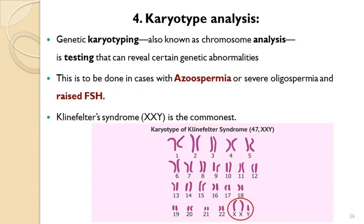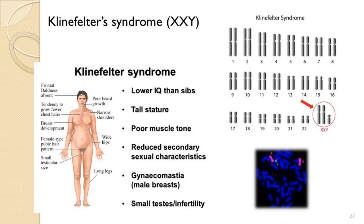Testicular biopsy and karyotype analysis are investigations done in the later part of infertility assessment. Patients who are azoospermic and have high FSH levels are subjected to karyotyping to confirm chromosomal abnormalities. Klinefelter's syndrome is the commonest reason for abnormal semen picture in male infertility. These patients present with tall stature, long bones, poor muscle tone, low IQ, poor secondary male sexual characteristics, reduced testicular volume, gynecomastia, wide hips with feminine pelvic appearance, and either total absence of spermatozoa or very few spermatozoa.